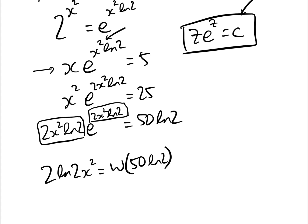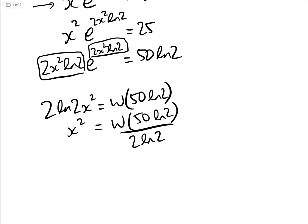Therefore, x² = W(50ln2)/(2ln2). When we now take the square root, what we would normally do is say x = ±√[W(50ln2)/(2ln2)].